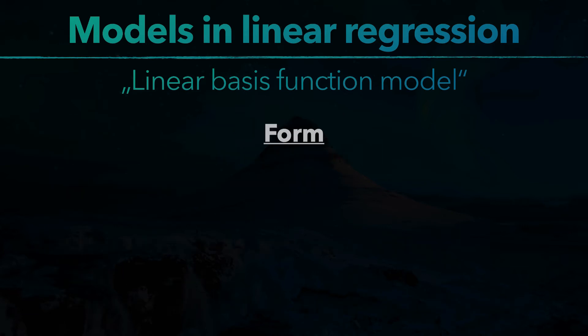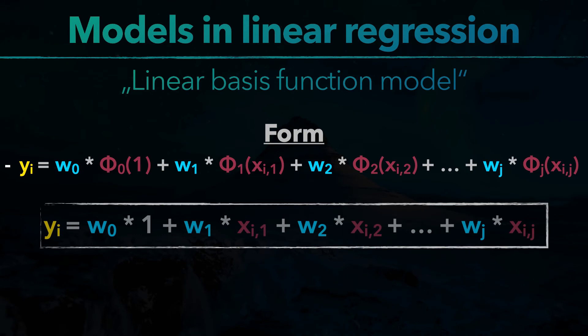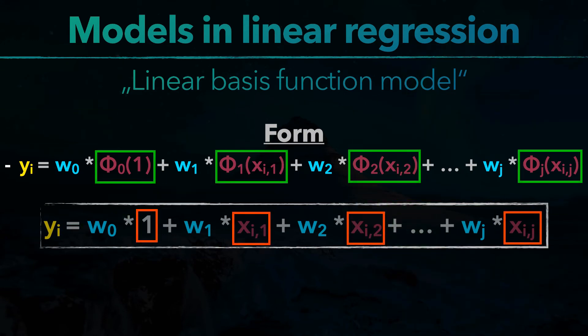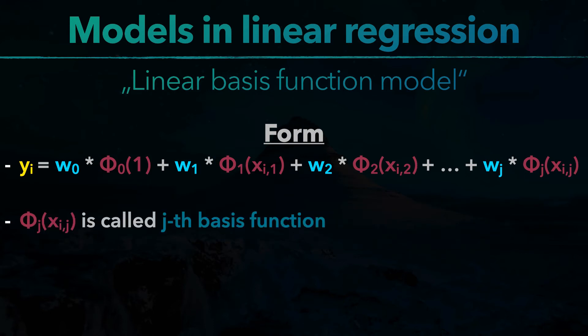It has this form, which is nearly the same as our vanilla model, just that we replace the independent variables with functions of the independent variables. Phi j of xij is called the j's basis function. Furthermore, phi 0 of xi0 equals 1, such that w0 acts as the bias, which is used for model approximation.